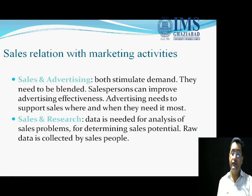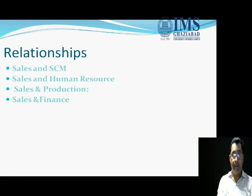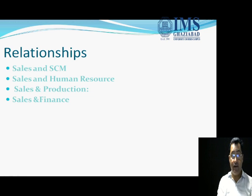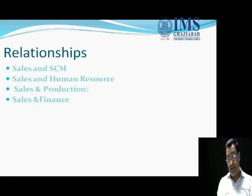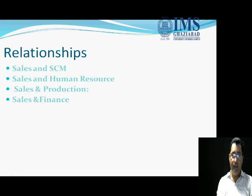Through research you can understand your potential and how you are going to solve every problem. Supply chain management (SCM) ensures your product is available to the right customer at the right time and at the right place — that is possible only with SCM. Human resource is also a most important part — every activity from procuring raw material to getting the product into the hands of the customer is done by human resources.